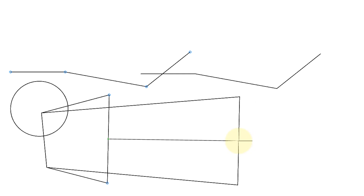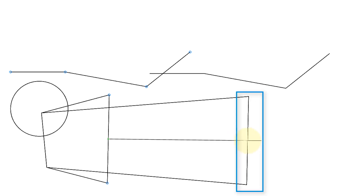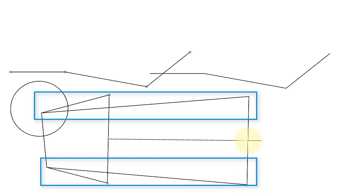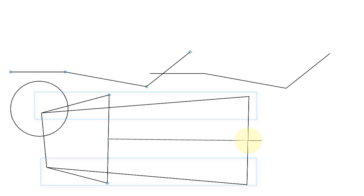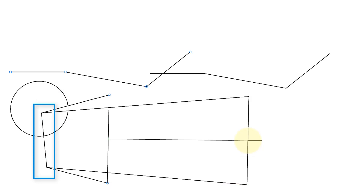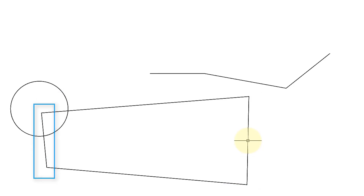This segment is not being stretched, but only being moved because it was entirely within the crossing window. These two segments were crossing the crossing window, so they're the ones that actually get stretched. And then finally, in the back here, this segment remains in place because it was outside the crossing window.